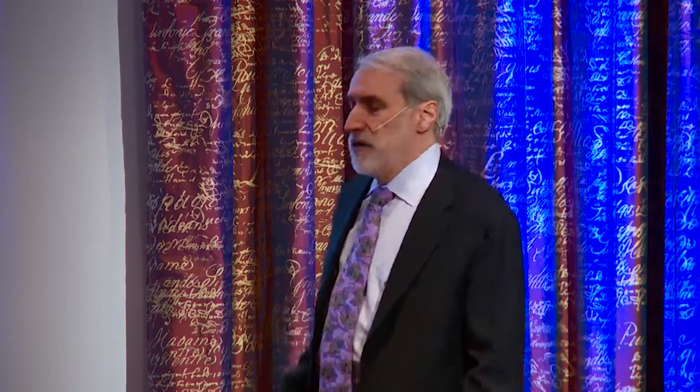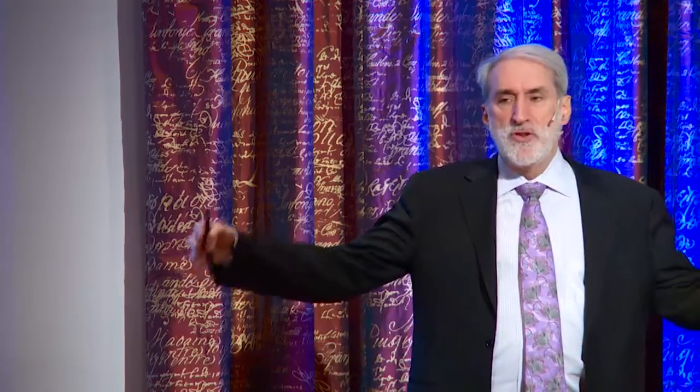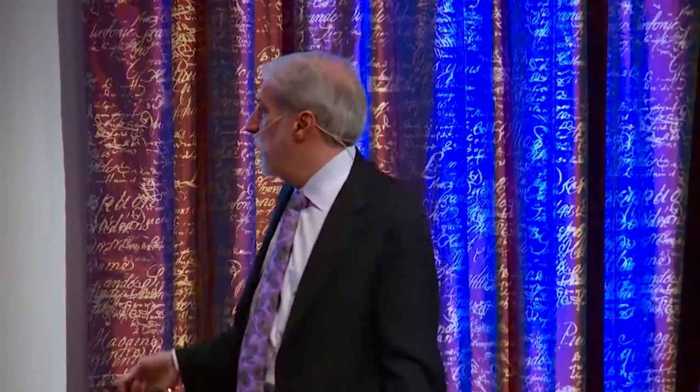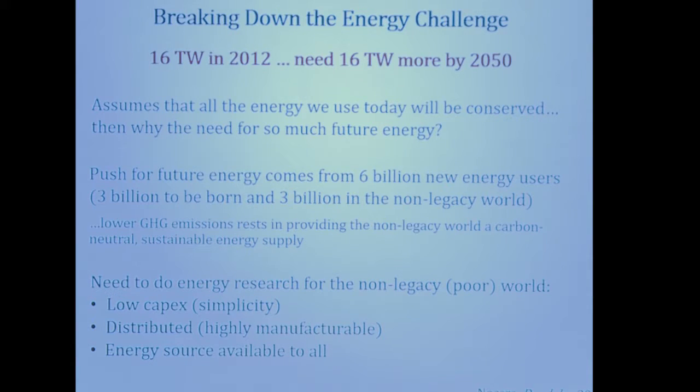And to do that, what I mean by non-legacy is the poor haven't built a large energy infrastructure, so they haven't inherited an energy system. We thought it has to be low capex. That means you need to invent and do research to allow simplicity. Once you get to high complexity, it involves lots of engineering, weight, and then cost, distributed, just like the hamburger, highly manufacturable. And if you're going to the poor, you want to make sure they have access to the same energy you do.